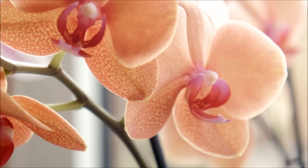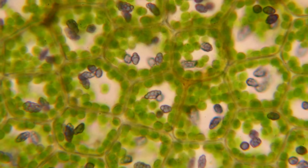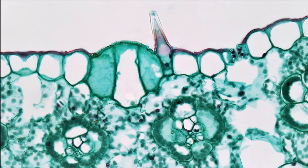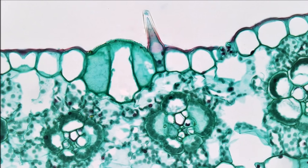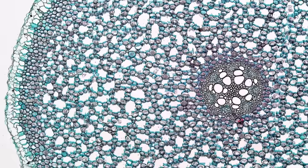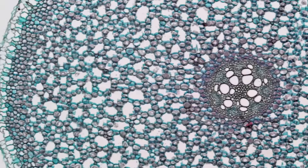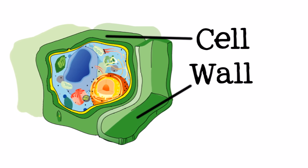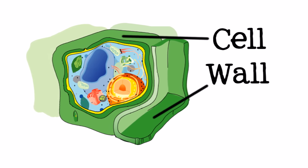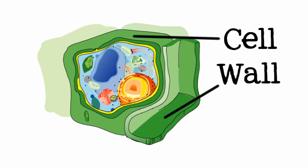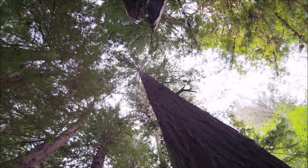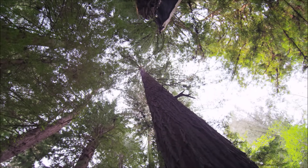So what makes something a plant? Plants are special on the cellular level. They are always made of more than one cell, meaning there are no single-celled plants, and their cells have special parts. One special part of a plant cell is the cell wall. Cell walls are rigid and unbending. Since plants do not have skeletons, these cell walls give them their structure.